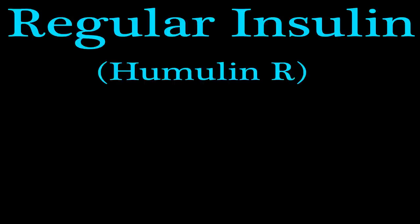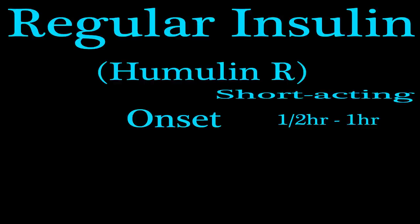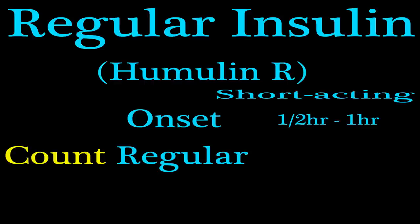The next one is regular insulin, which is short acting. This is Humulin R; there is also Novolin R. For short acting, look at the little letter L in 'regular.' Same thing — put it on its side and it becomes a half sign, so the onset is half an hour to an hour.